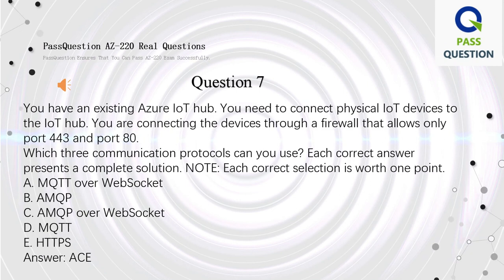Question 7. You have an existing Azure IoT Hub. You need to connect physical IoT devices to the IoT Hub. You are connecting the devices through a firewall that allows only port 443 and port 80. Which three communication protocols can you use? Each correct answer presents a complete solution. Note: each correct selection is worth one point. A. MQTT over WebSocket. B. AMQP. C. AMQP over WebSocket. D. MQTT. E. HTTPS. Answer: A, C, E.